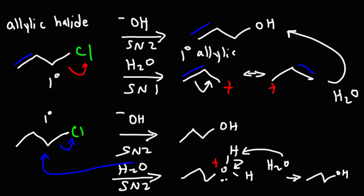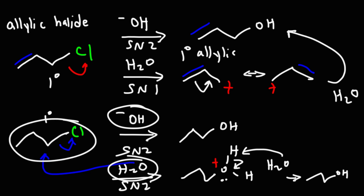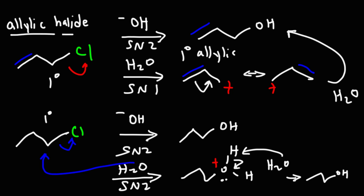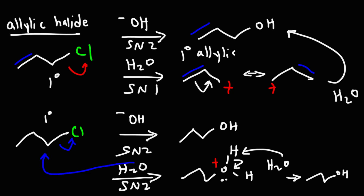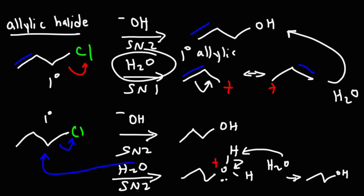Notice the difference: with propyl chloride, it didn't matter whether we used hydroxide or water, because that substrate favors SN2 regardless of the nucleophile. But with an allylic halide as the substrate, the choice of nucleophile does matter. Since allylic halides work well for both SN2 and SN1, a strong nucleophile gives SN2 while a weaker nucleophile like water gives SN1.